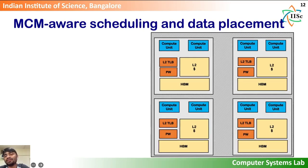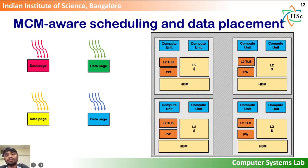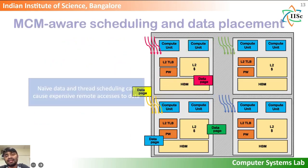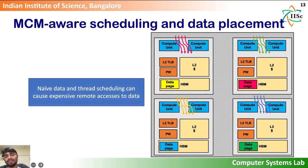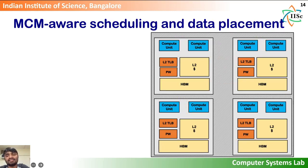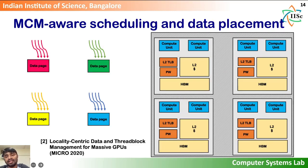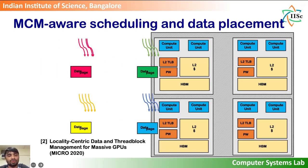Previous works have studied the effect of MCM designs on data accesses. Shown on the left are threads of a GPU kernel along with the data that they access. The color coding denotes the access relation between threads and data pages — for example, the green color threads access the data pages in green. Scheduling the threads and placing data across chiplets can lead to expensive remote accesses. To combat this, prior work like LAST, published in Micro 2020, uses static analysis of GPU kernels to determine their access patterns and then schedules threads and places data on chiplets such that threads mostly access data pages on local memory.